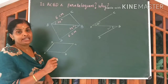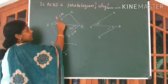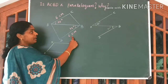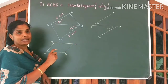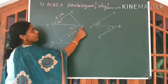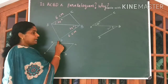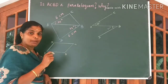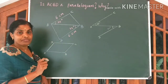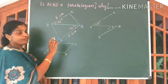So it is enough if you prove AC and BD are equal and parallel. Also, you have to prove BC and AD to be equal and parallel. Is it clear, children? Come to the question.